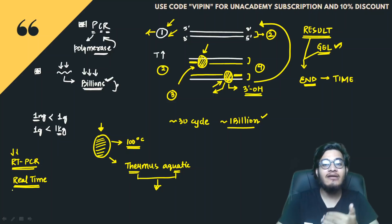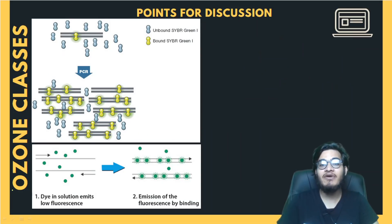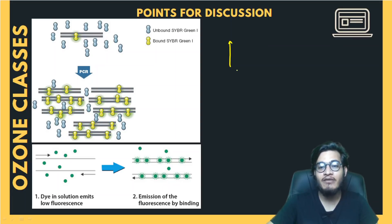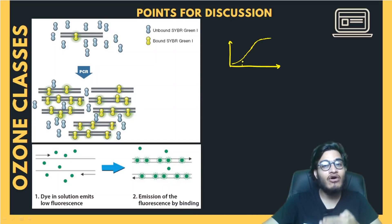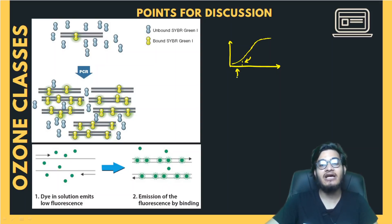यहाँ पर क्या होती है — आपकी fluorescent dyes डलती हैं। तो यहाँ पर आपको एक graph जो है, इस machine के ऊपर ही plot होता हुआ दिखाई दे जाता है। जैसे-जैसे आपके DNA की एक copy है तो कम dye उसके साथ bind करेगी, फिर दो copies, चार, आठ, सोलह, बत्तीस — इस तरीके से जैसे-जैसे हजारों copies बन जाएंगी, amplification show करने लगेगा और आपकी fluorescence का एक graph बन जाएगा। अगर यह graph increase हो रहा है मतलब DNA की copies increase हो रही हैं — यानि आपका gene amplify हो रहा है।